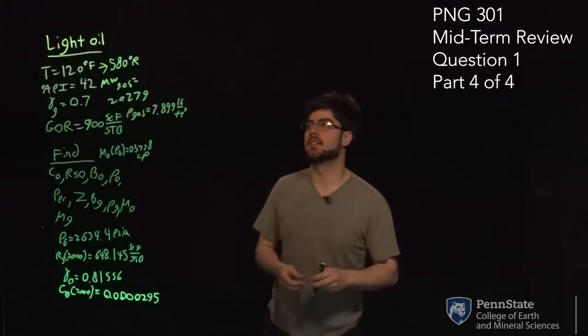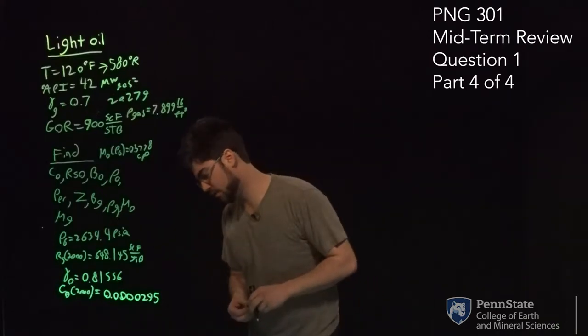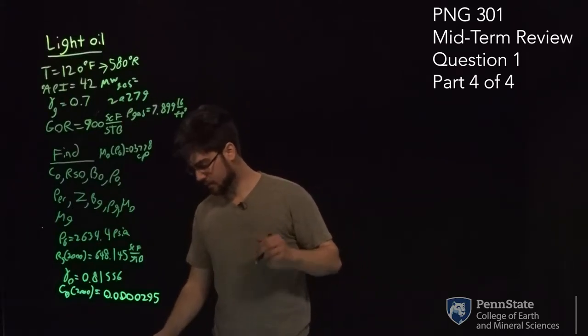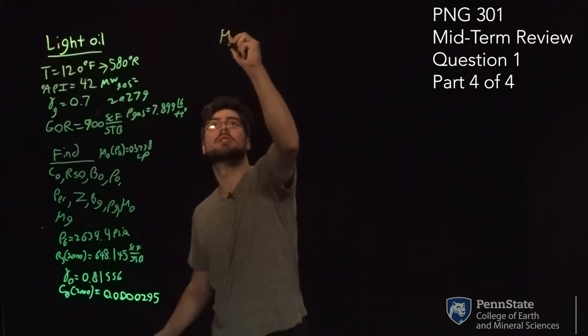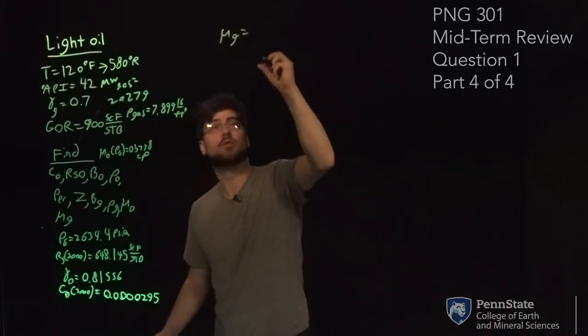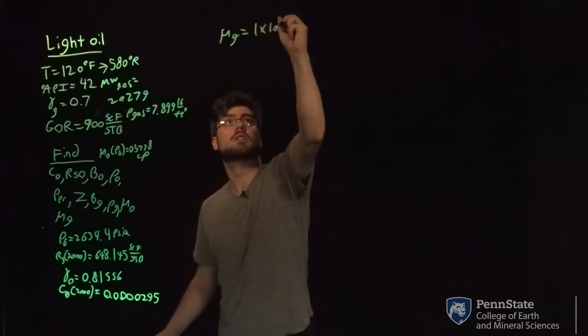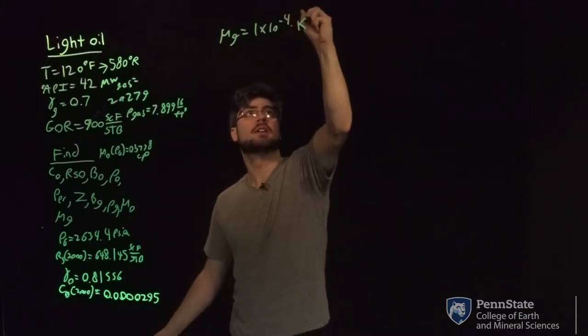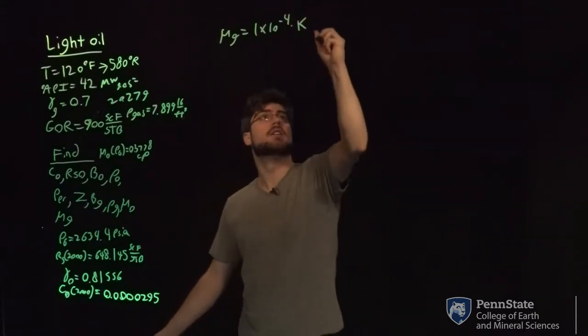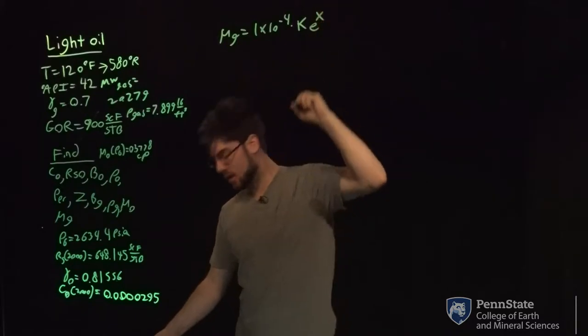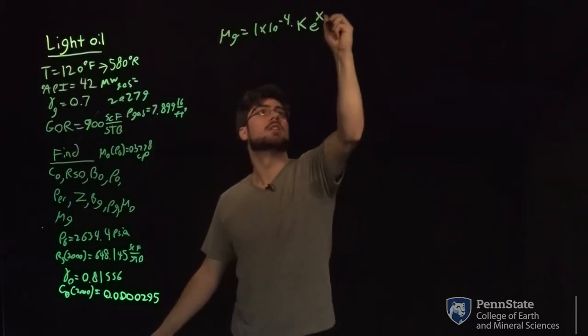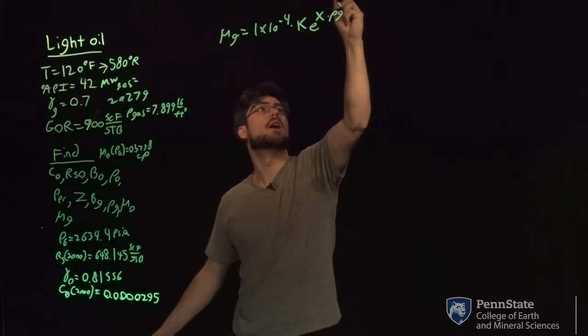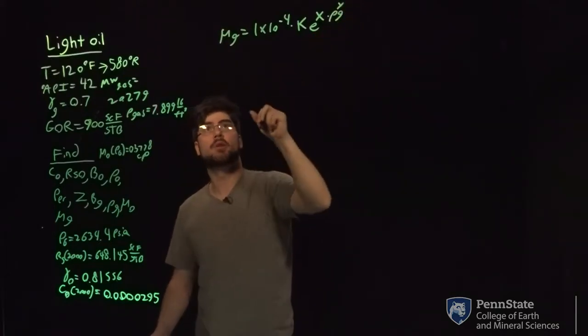So to find the viscosity of the gas, we're going to be using equations 3.73 through 3.76. Those equations are mu g equals 1 times 10 to the negative 4 times k, which is a constant, e to the x, which is a constant, times rho g to the y power. So that's all in the exponent right there.